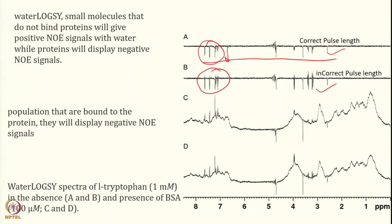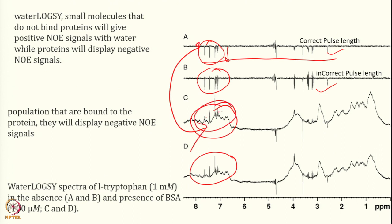In presence of the protein molecule, you see certain peaks. In the case of BSA, you see peaks C and D. Comparing correct versus incorrect pulse length shows this. The peaks that appear are because the transfer happened. A population bound to protein will display a negative NOE signal. An experiment was done with 1 millimolar tryptophan in the presence of 100 micromolar BSA. The experiment was done and NOE was observed on the ligand, showing that they are interacting. That is how you can find binding using WaterLOGSY.